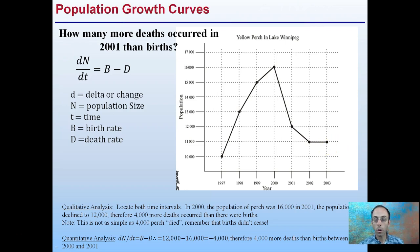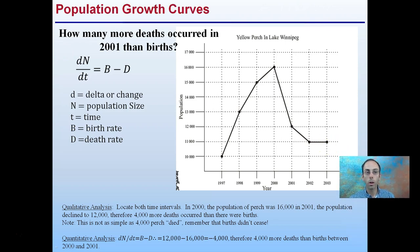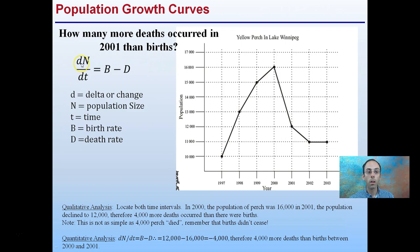We're going to start by applying this to an example of yellow perch, which is a freshwater fish. The question is: how many more deaths occurred in 2001 than births, based on this data, compared to the year 2000?